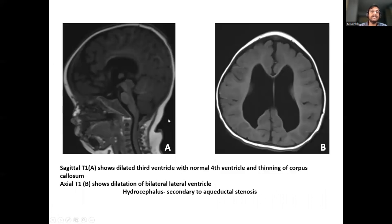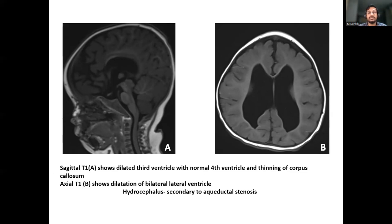A sagittal T1-weighted image shows a dilated third ventricle with a normal-appearing fourth ventricle and thinning of the corpus callosum. The axial T1 image shows dilatation of the bilateral lateral ventricles; the diagnosis was hydrocephalus secondary to aqueductal stenosis.